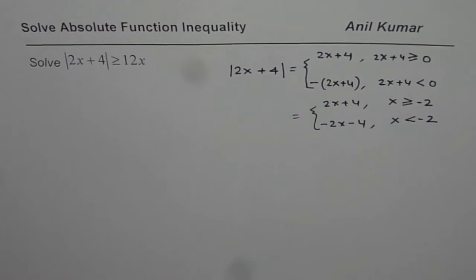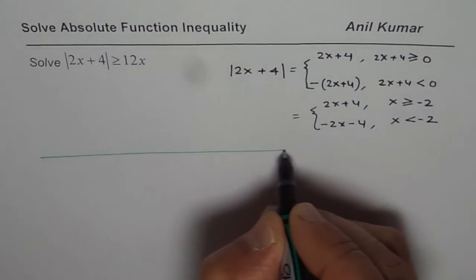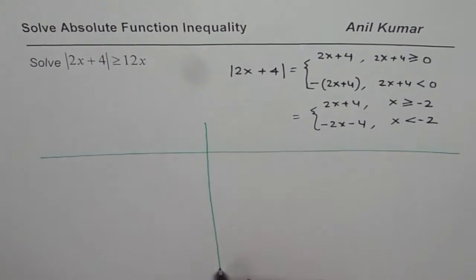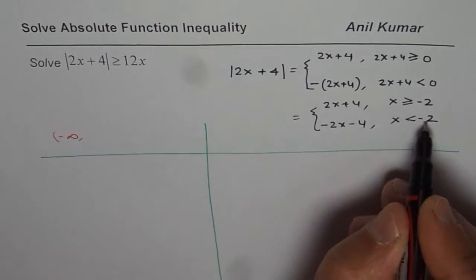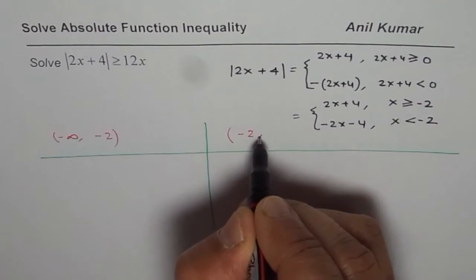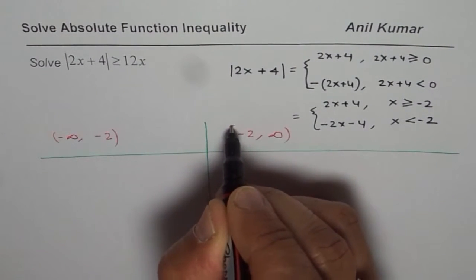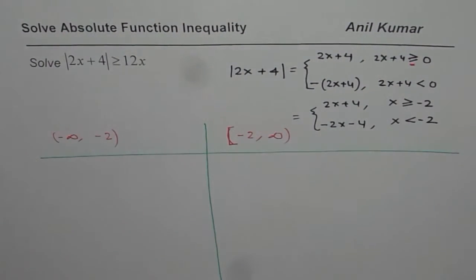Now this absolute function clearly indicates that we need to simplify in two particular intervals. The first interval for us will be from minus infinity to minus 2 and the second one will be from minus 2 to infinity. We can actually include minus 2 in this interval. So my recommendation is always include on the right side, greater than or equal to one.